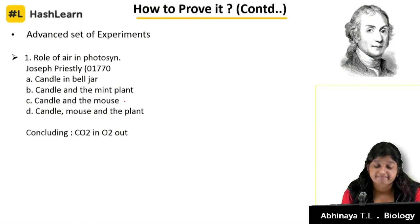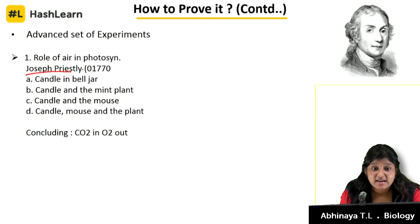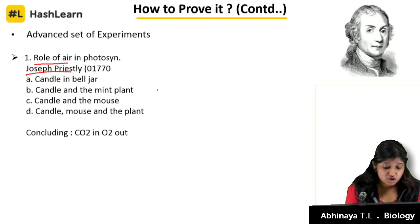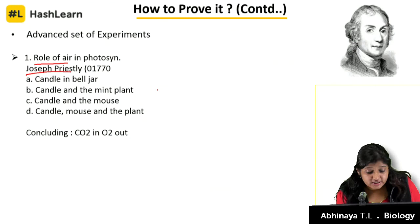Let's get into the experiment given by Joseph Priestley. He proved the role of air in photosynthesis. He said air is required for photosynthesis — where are oxygen and carbon dioxide coming from? He did four combinations using a bell jar. He took a candle, a mouse, and a plant. Let's see with four bell jars what he did and what he concluded.